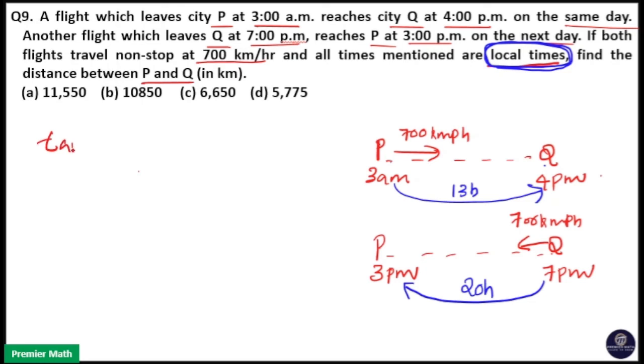So, average of time is equal to - this is 13, this is 20. So, 13 plus 20 divided by 2. That is equal to 33 by 2. That is 16.5 hours. So, this is the correct time duration. Whenever you have local times, take the average of the time.